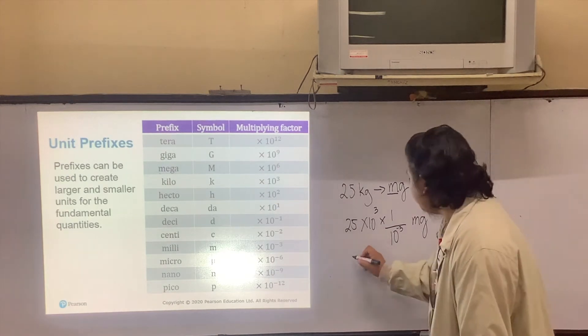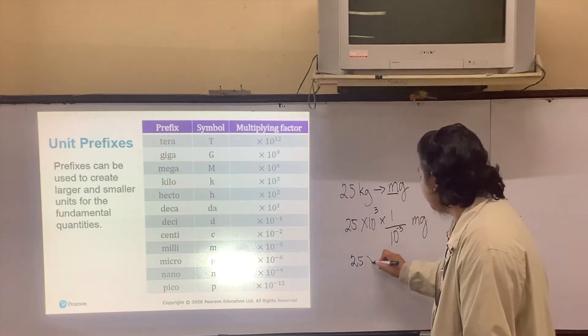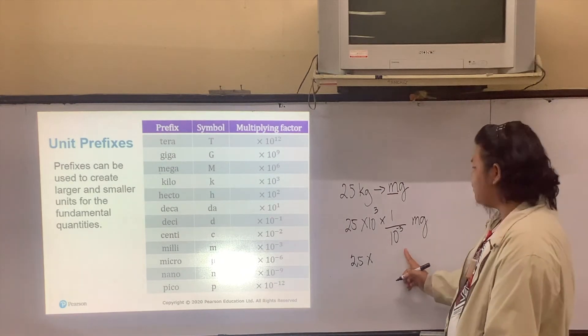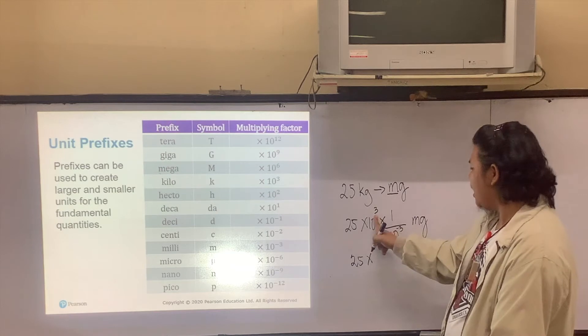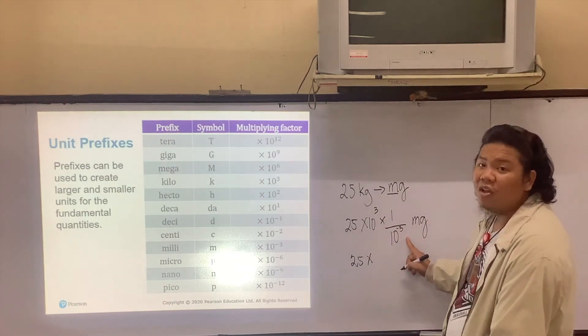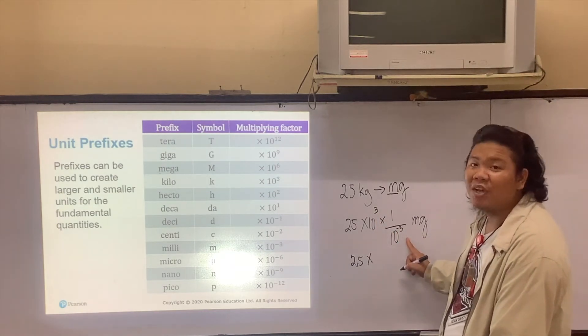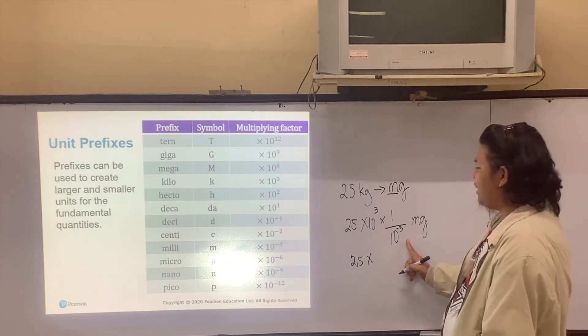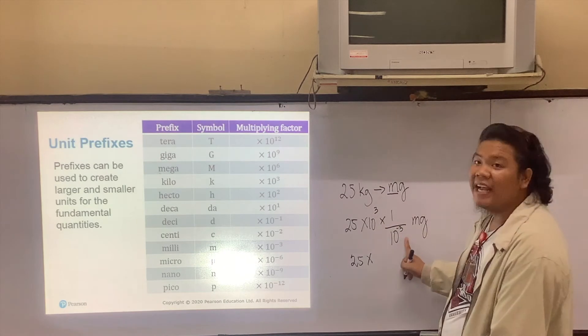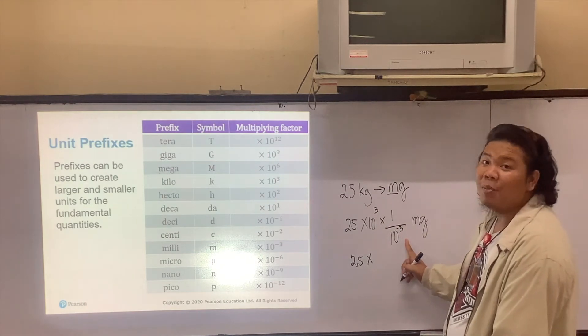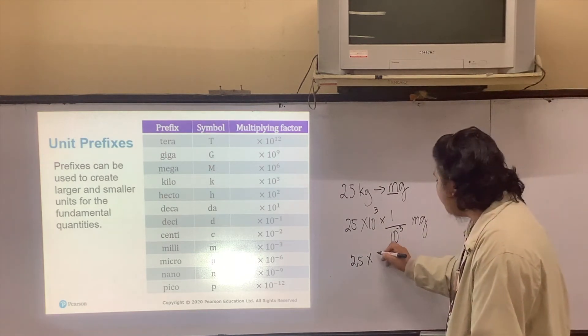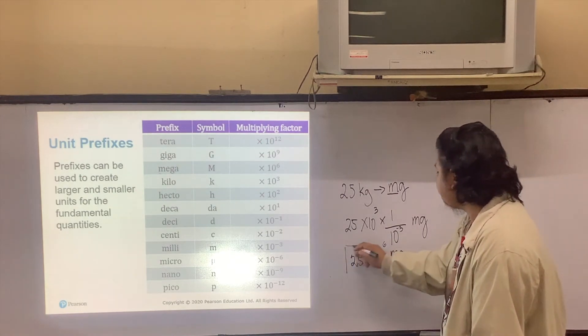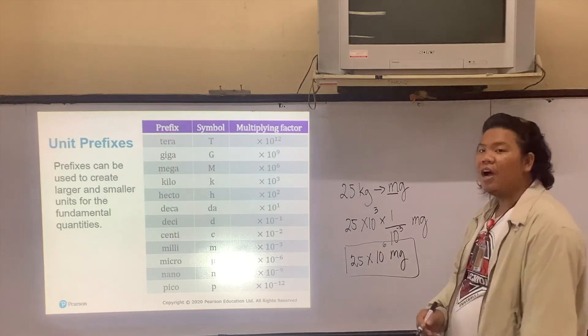So that will be 25 times 10 to some power. From your junior high school math, you have 3 and then negative 3. All you have to do is subtract because this is the division rule of exponents. You have 3 minus negative 3, and you get 10 to the positive 6. So this will be 25 times 10 to the positive 6 milligrams. That's how we do it.